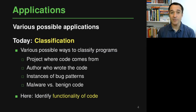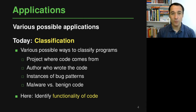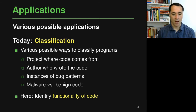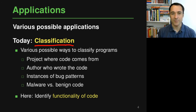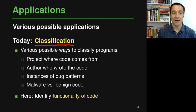In principle, there are many different applications of this idea. You can basically predict whatever you want about a piece of code once you have summarized it in a suitable way, for example using a convolutional neural network. Today we'll focus on predictions that are about classification — basically putting a piece of code into one out of multiple possible classes.